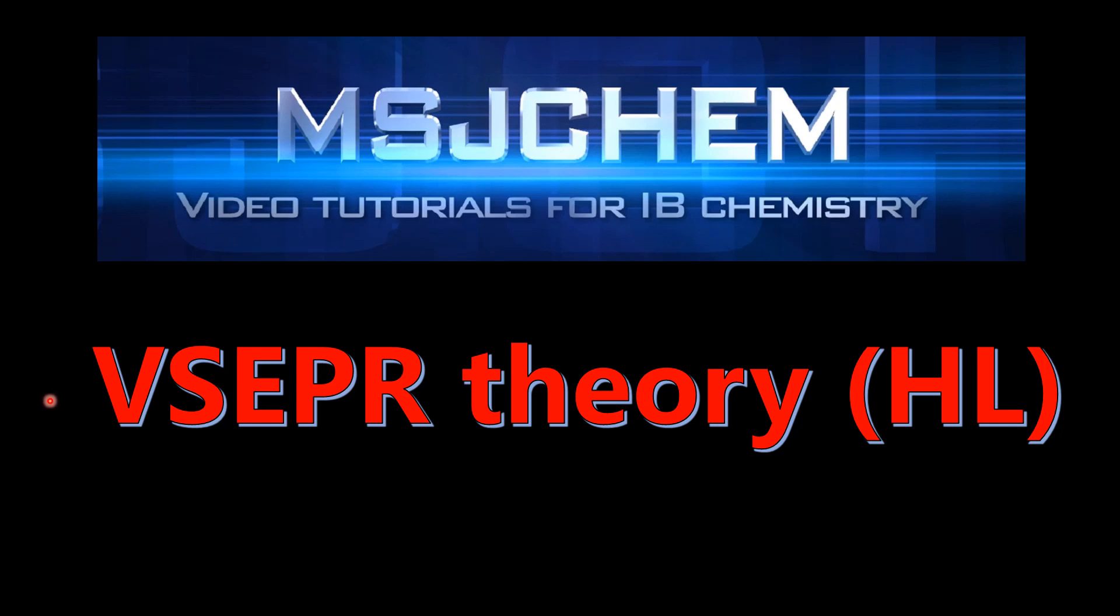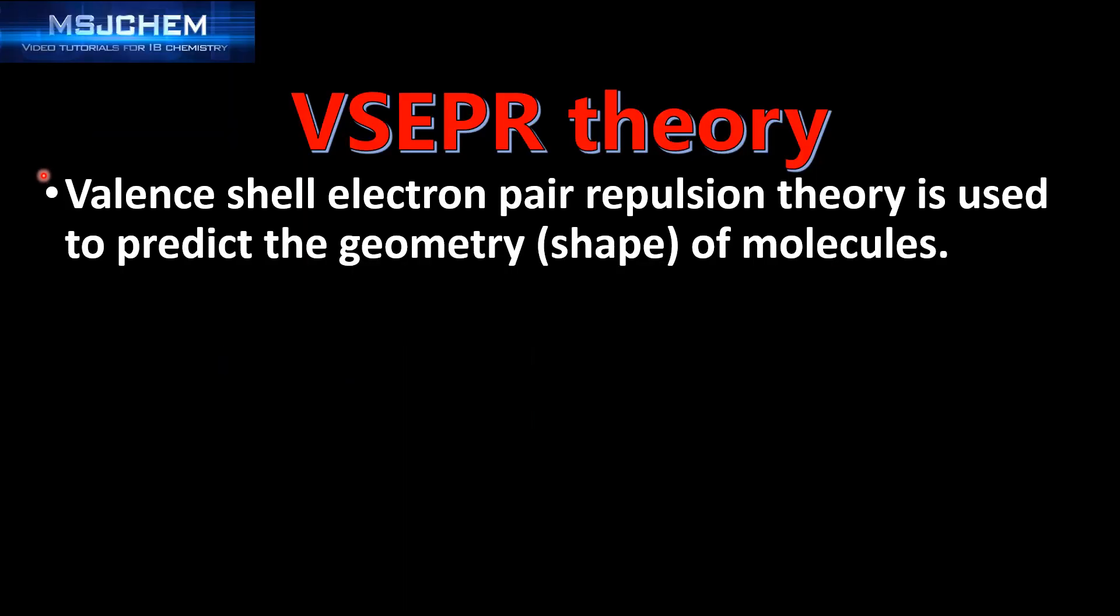This is MSJChem and in this video we're going to look at VSEPR theory for the higher level. The actual theory is the same as in the standard level video, so valence shell electron pair repulsion theory is used to predict the geometry of molecules.